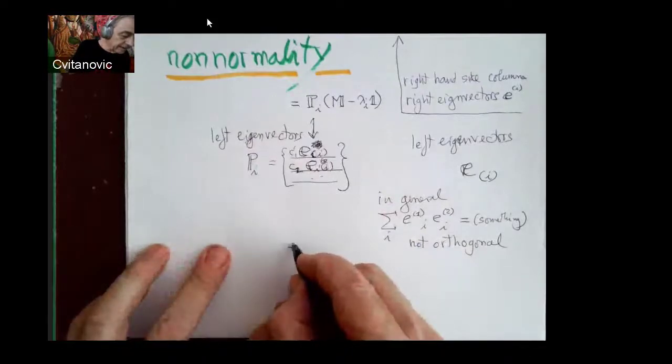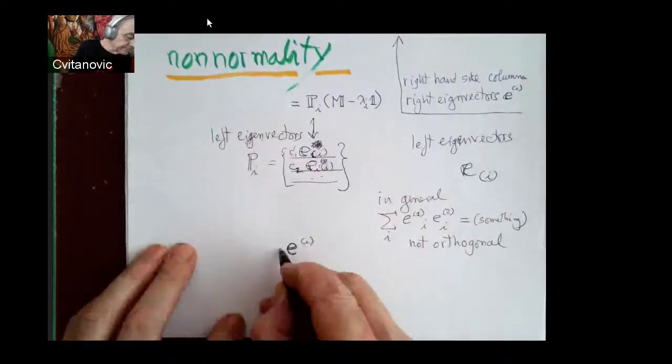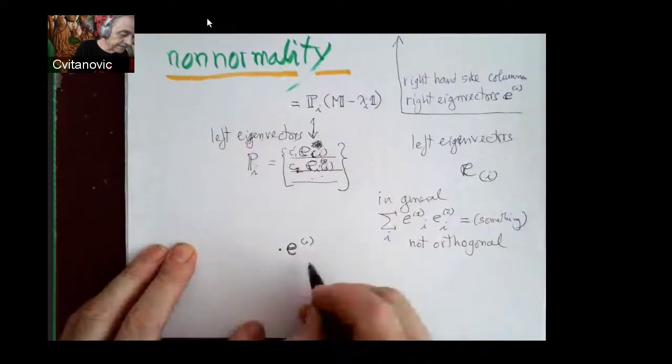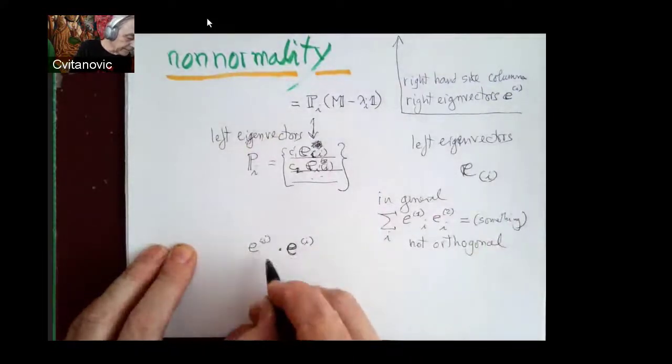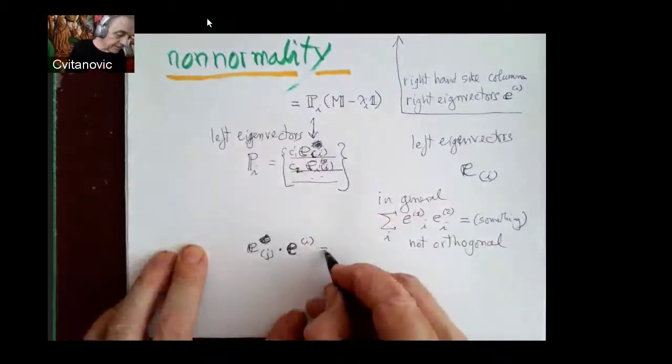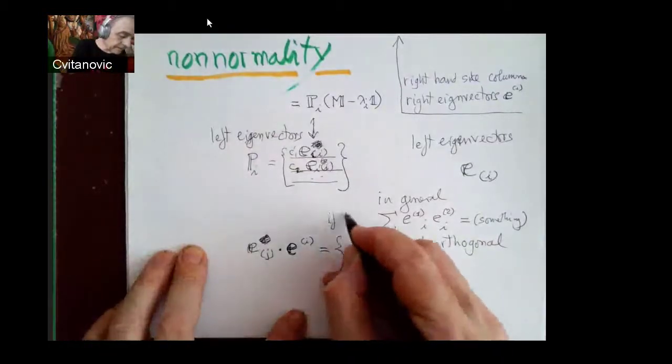There is orthogonality of the following kind. If I take a right eigenvector, a vector multiplied by the transpose which is the left eigenvector j, this is if i not equal j.